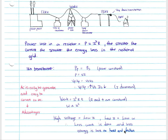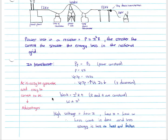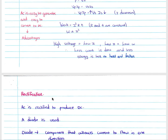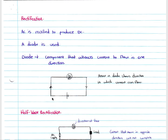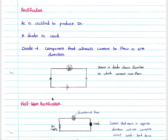By stepping up the voltage we simply lower our current, and therefore we lose less energy to the power grid — it's more efficient because we are transferring more current to the places that we need to use it. If they ever ask you why we produce AC instead of DC: AC is easy to generate from an AC generator, it is easy to convert to DC, and it is easy to step up and step down when we transfer it along the power grid.